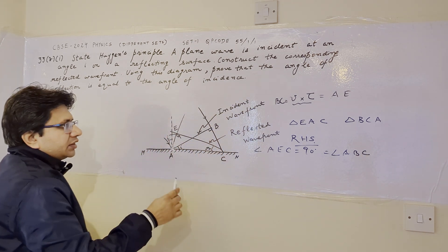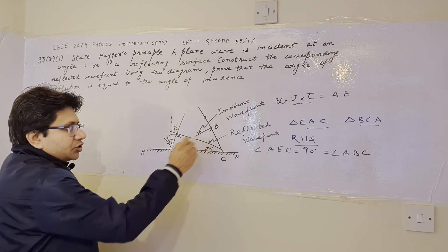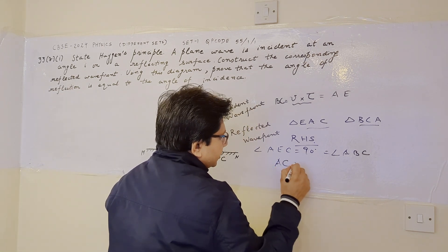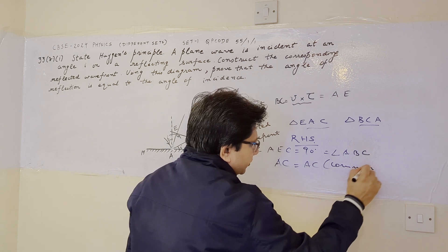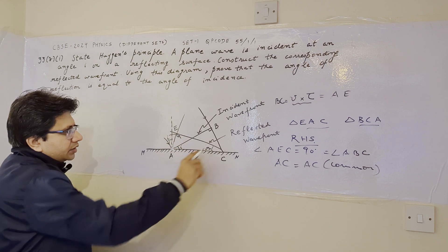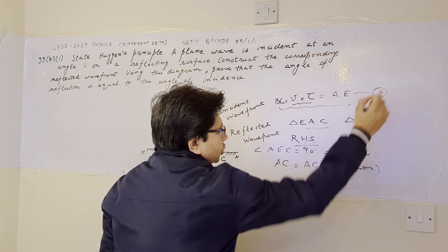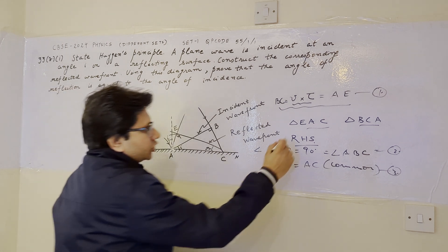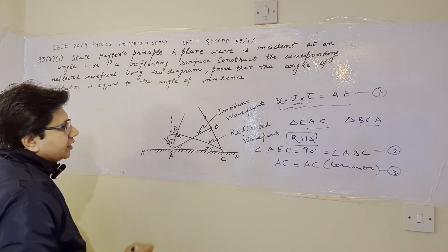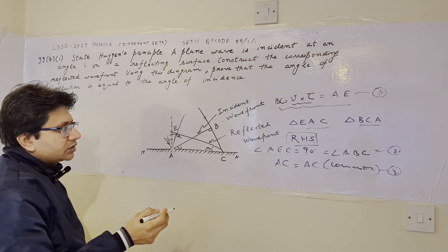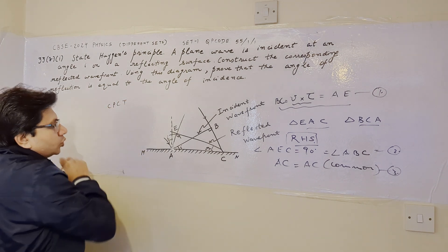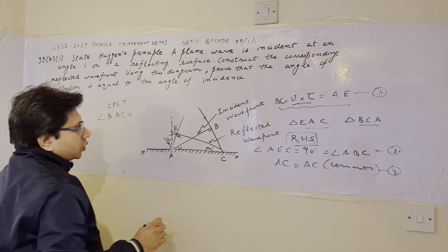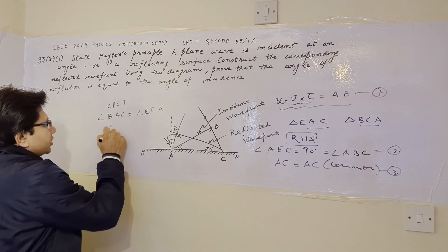Since CE is a tangent, angle AEC = 90°. Similarly, angle ABC = 90°. So in the two triangles, these angles match: angle AEC = 90° and angle ABC = 90°. Also, AC is the common side, so AC = AC. And we proved that AE = BC. These are equations one, two, and three, from which we conclude the two triangles are congruent by the RHS rule.